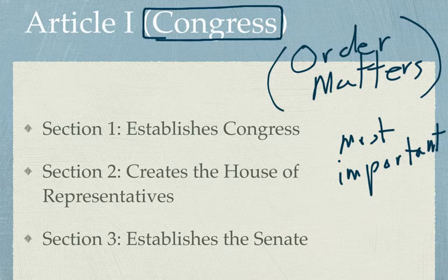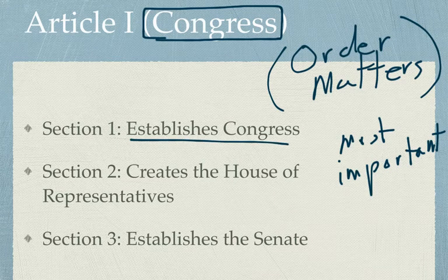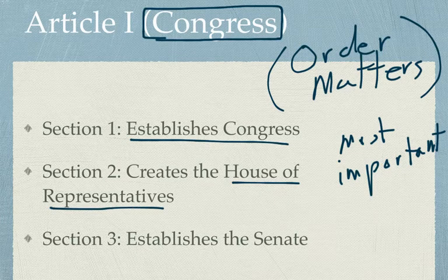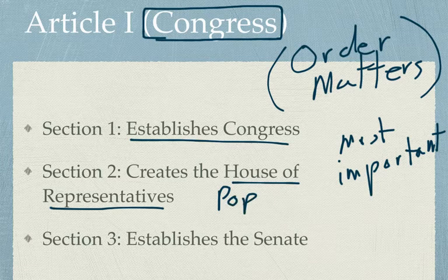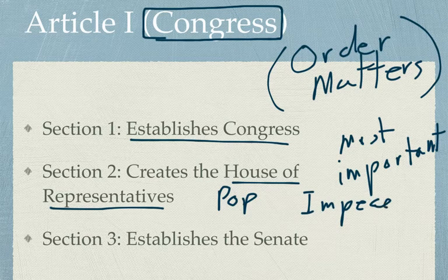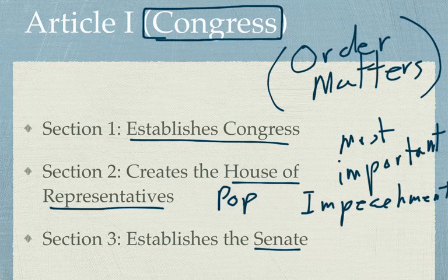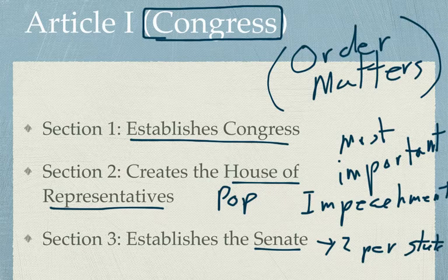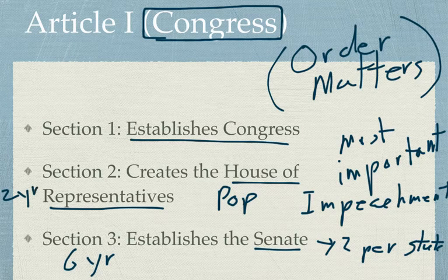Article 1, Section 1 establishes that there will be a Congress and that all legislative powers are granted to this Congress. Article 1, Section 2 sets up the House of Representatives, establishing qualifications for running for House, population as the basis for the House's size, and gives the House its only unique power: the power of impeachment. Article 1, Section 3 deals with the Senate, establishing that each state gets two senators, with six-year terms for senators and two-year terms for the House, and gives the Senate the power to judge impeachment cases.